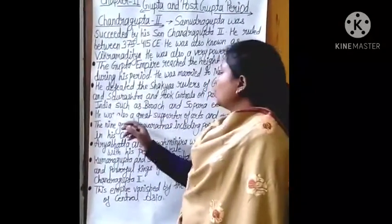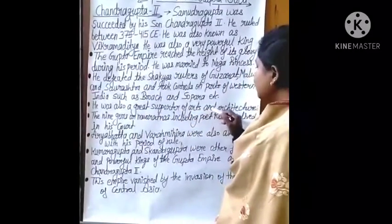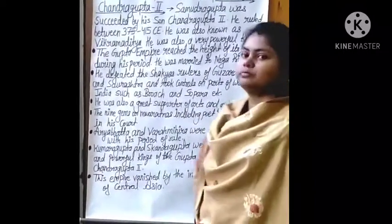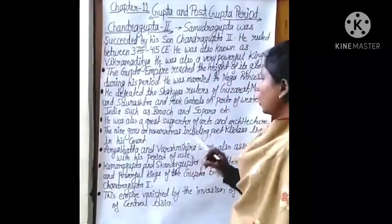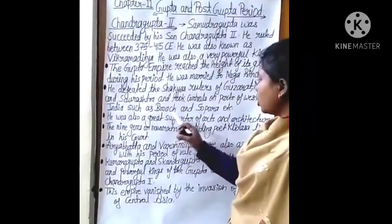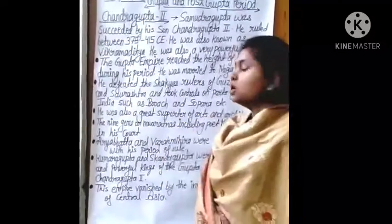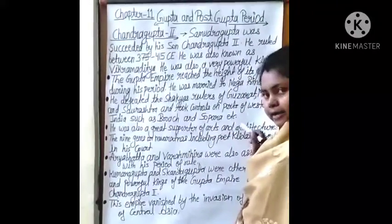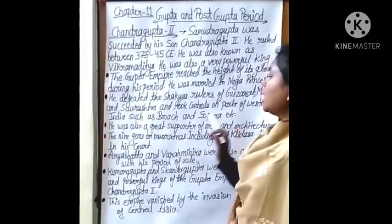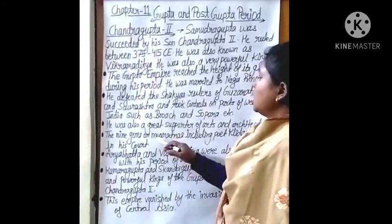Chandragupta 2 was also a great supporter of arts and architecture. His court was home to the nine gems, known as the Navratnas.